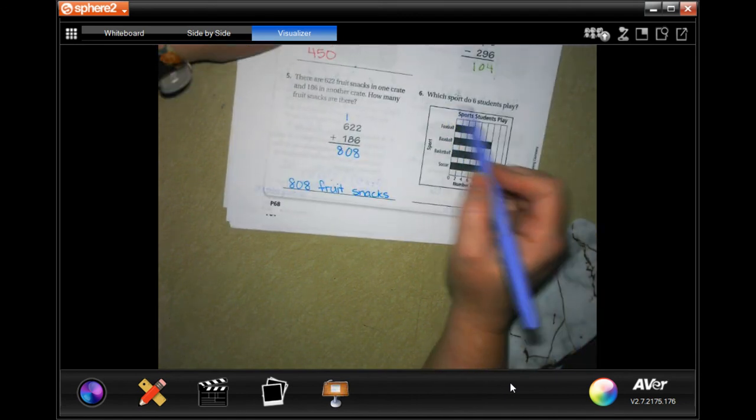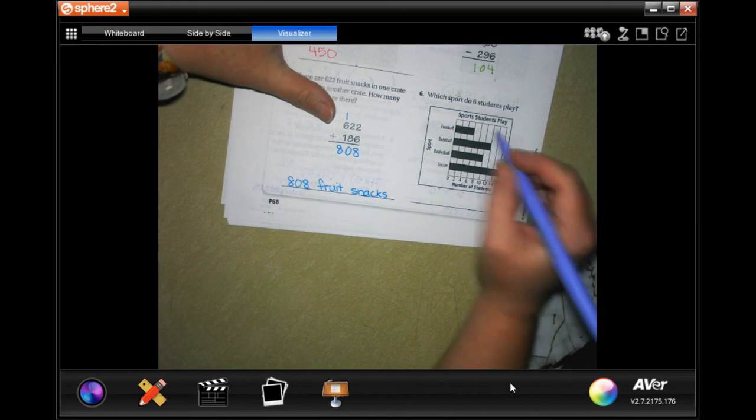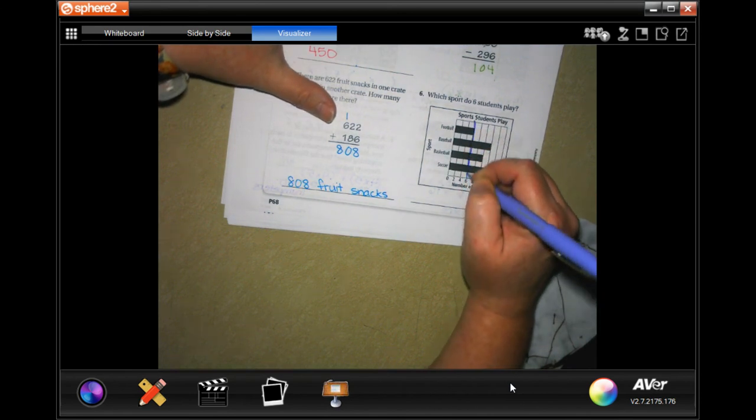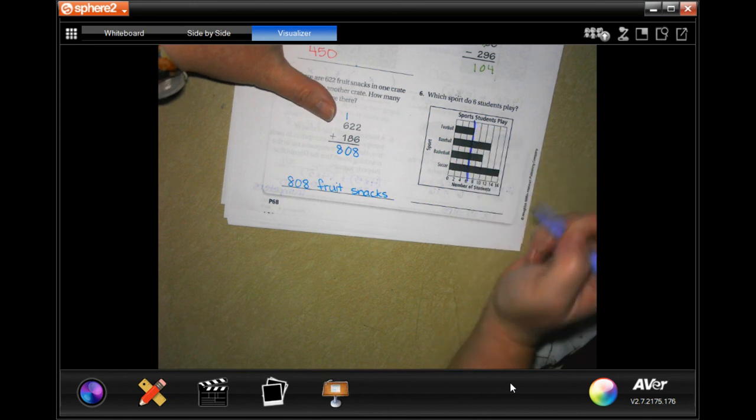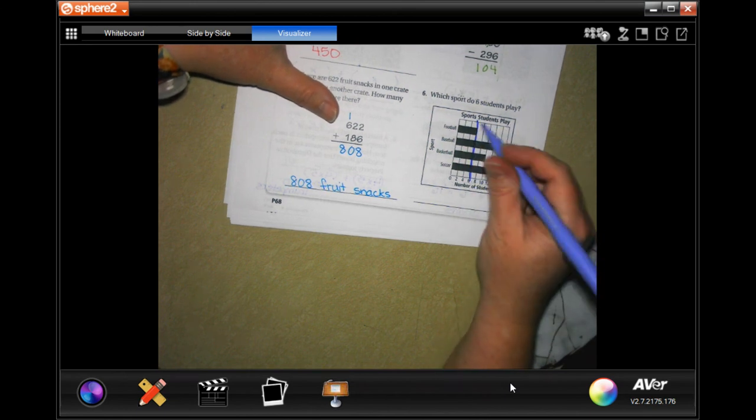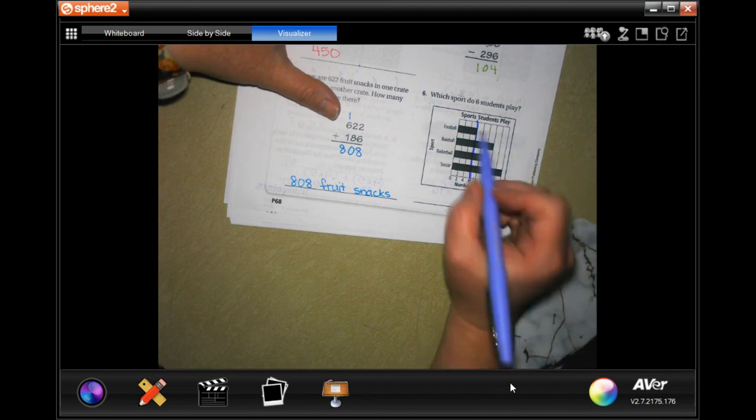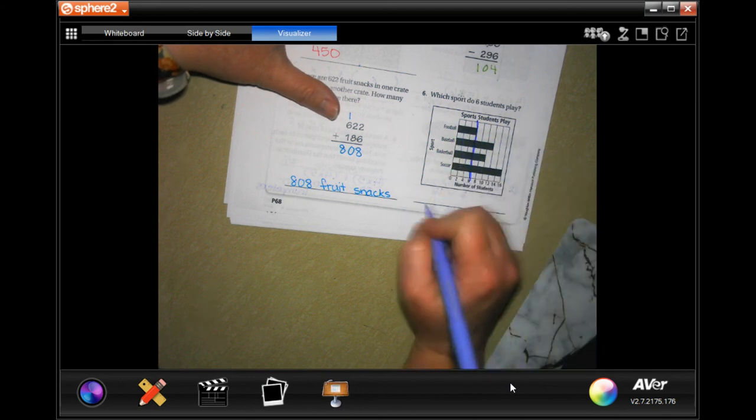This wants to know which sport do six students play. So I'm just going to draw a line at six, and that way I can just say which one matches that line. And that's going to be this one, which is football.